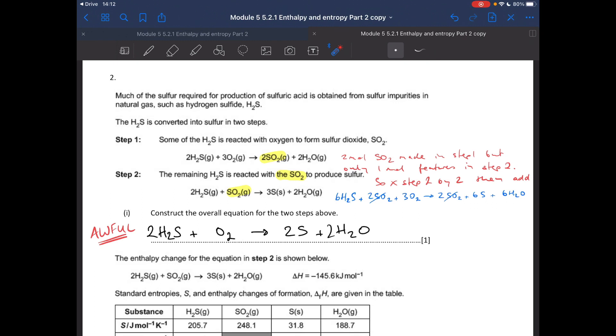And then it says for step 2, the remaining H2S is reacted with the SO2 to produce sulfur. Now there's only one mole of SO2 here. So that needs to be reacted. So if we double this equation out and then add them together, and then we can cancel down.